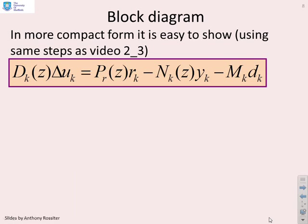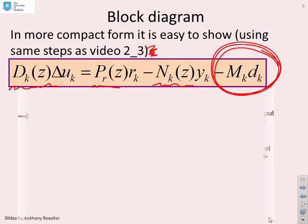If I now put it into transfer function form, which you'll see is the same as we did in video 2-3, you'll find I get the same denominator, the same feedforward, the same numerator as I got in those videos. But the difference is I get an extra term here on the end, which comes from the offset.